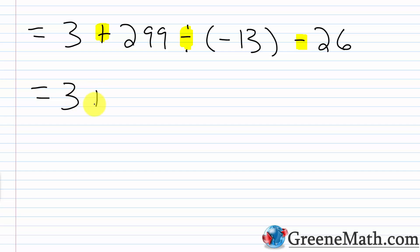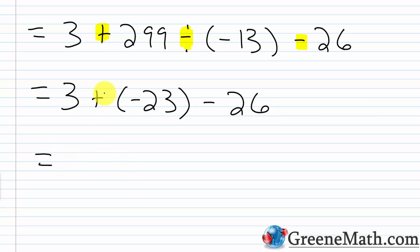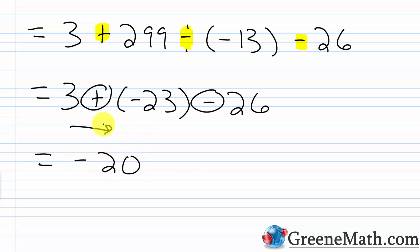So we'd have 3 plus a negative 23, and then minus 26. All I have now is addition and subtraction, so we work those left to right. 3 plus negative 23 is going to be negative 20. Keep the sign that has the larger absolute value — in this case negative 23 — so the answer is negative. Then subtract the smaller absolute value, which is 3, from the larger, which is 23. 23 minus 3 is 20. So you get negative 20.